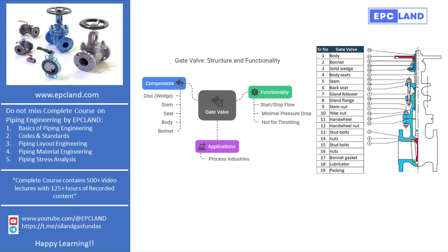Now let's briefly look at the parts of a gate valve. The main part is the disc, which is also called the wedge. This wedge is the part that moves up and down to block or allow flow. There's also a stem which connects the hand wheel or actuator to the disc. Turning the hand wheel raises or lowers the stem, which in turn moves the disc. The seat is the surface where the disc rests when the valve is closed. The body holds everything together and the bonnet is the cover on top of the valve where the stem moves in and out.